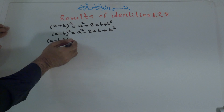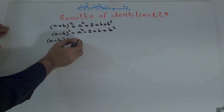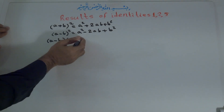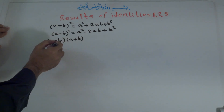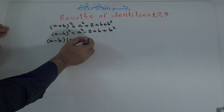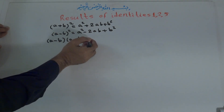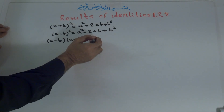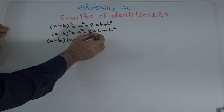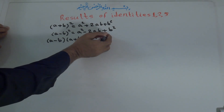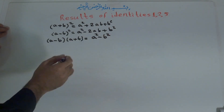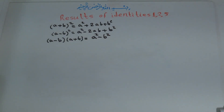Identity number five: a plus b times a minus b is equal to a squared, or a to the power of two, minus b to the power of two.